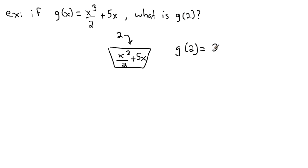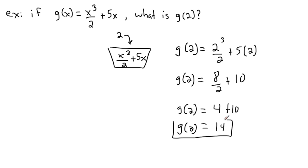g of two is going to be equal to—everywhere I see an x I replace it with two. So it's 2 cubed divided by 2 plus 5 times 2. Now I should take my time. Two to the power of three is not 2 times 3, which is 6. It's 2 times 2 times 2—two multiplied by itself three times. So 2 times 2 is 4, times 2 is 8. So 8 over 2 plus 5 times 2 is 10. Eight divided by 2 is 4, and 4 plus 10 is 14. So g of two equals fourteen.